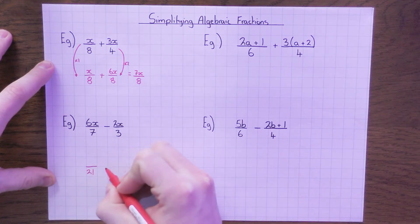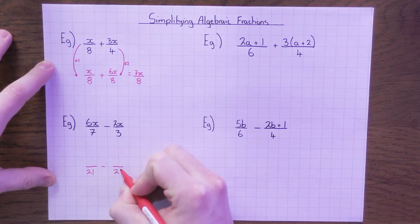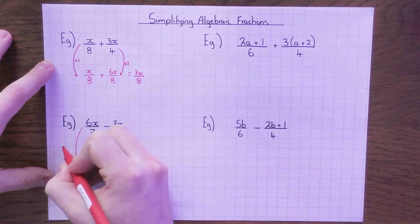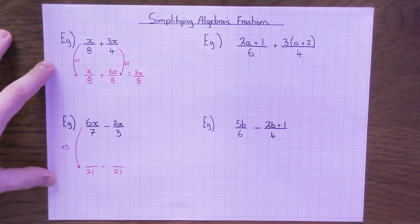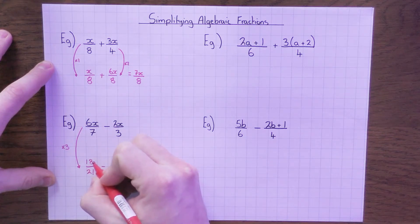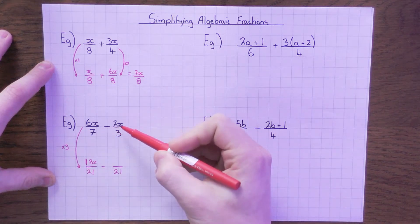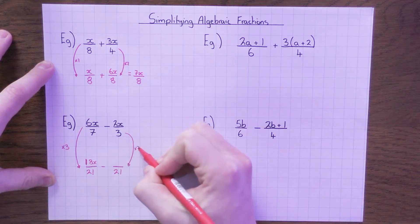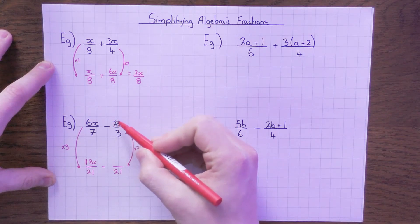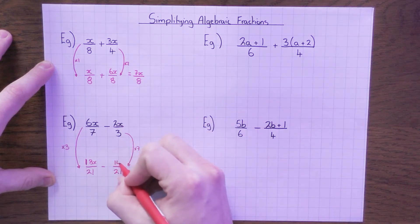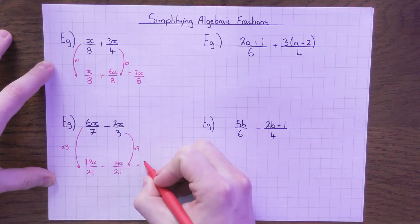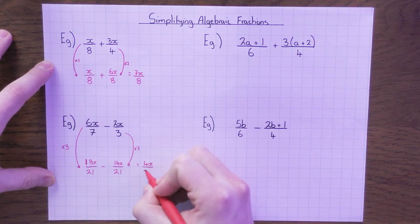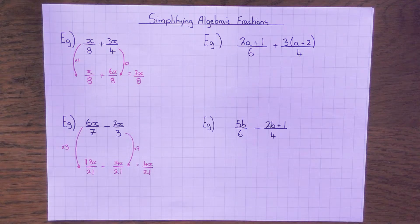I'm going to change my denominator to be 21 for both. What do I do to 7 to get to 21? I times it by 3, and therefore I must times the numerator by 3 as well. So 6x times 3 is 18x. What do I do to 3 to get to 21? I times that by 7, so I must times the numerator — this 2x — by 7. So 2x times 7 is 14x. Now my denominators are the same, I can subtract the numerators. 18x take away 14x is 4x, over 21.